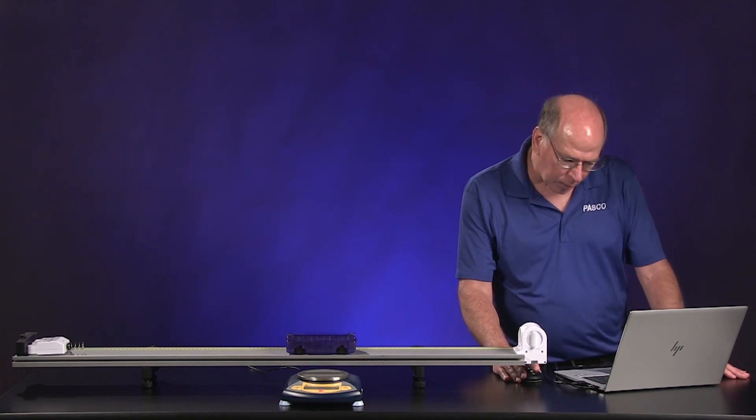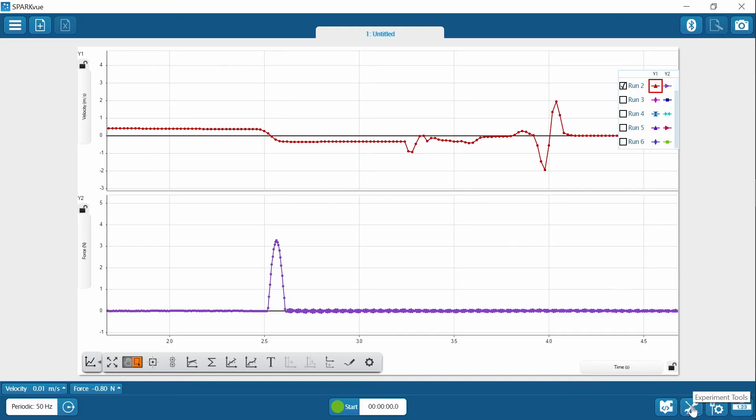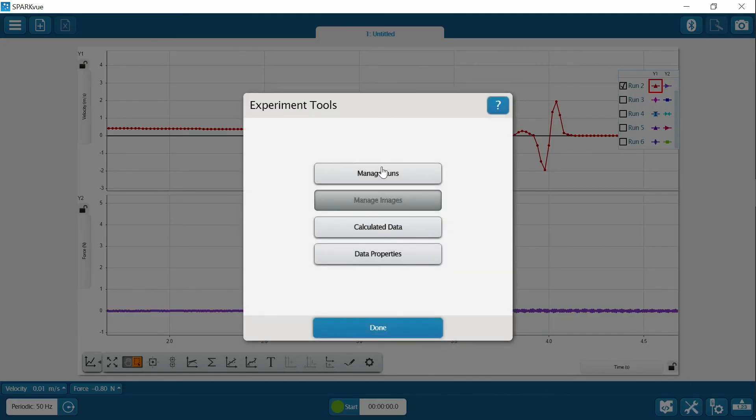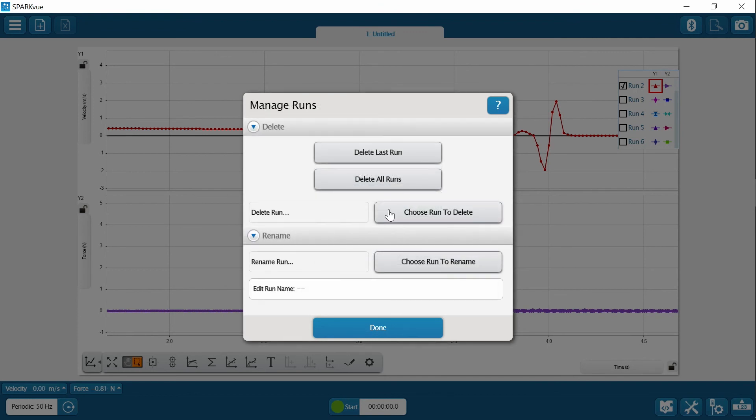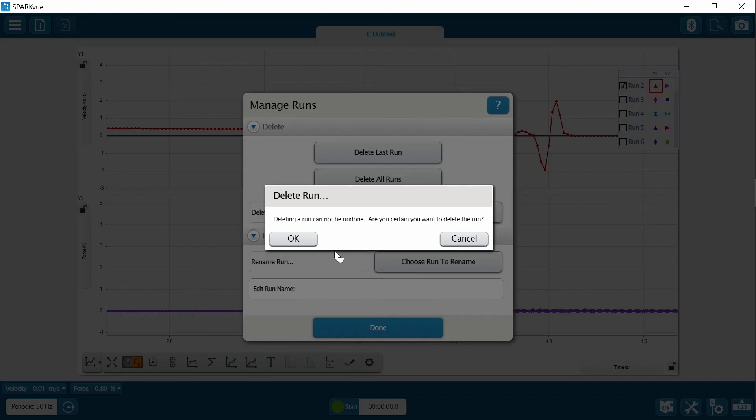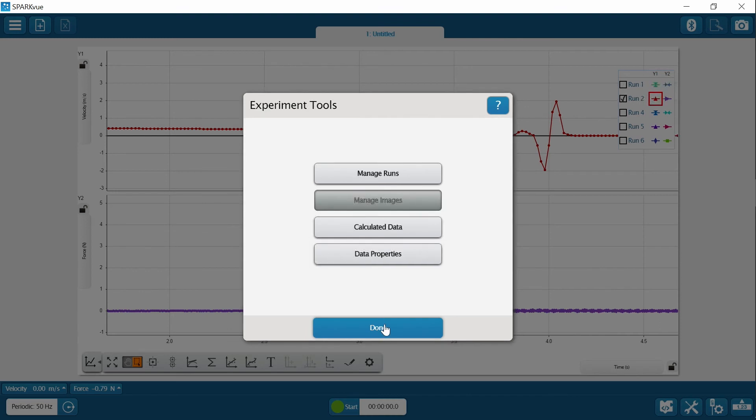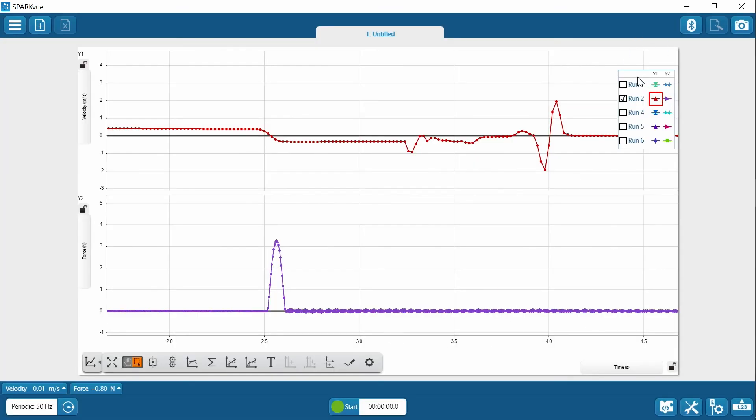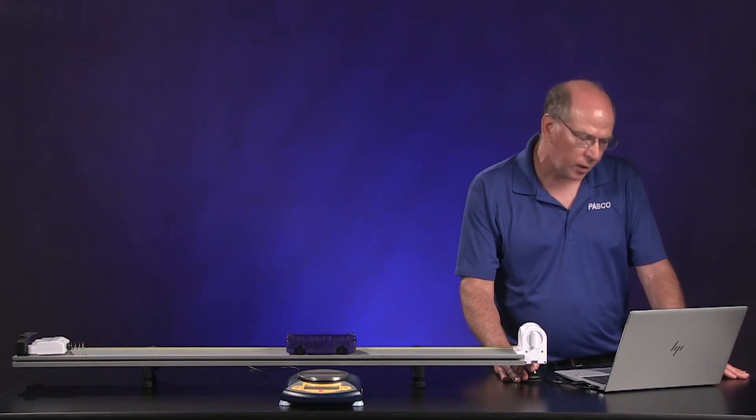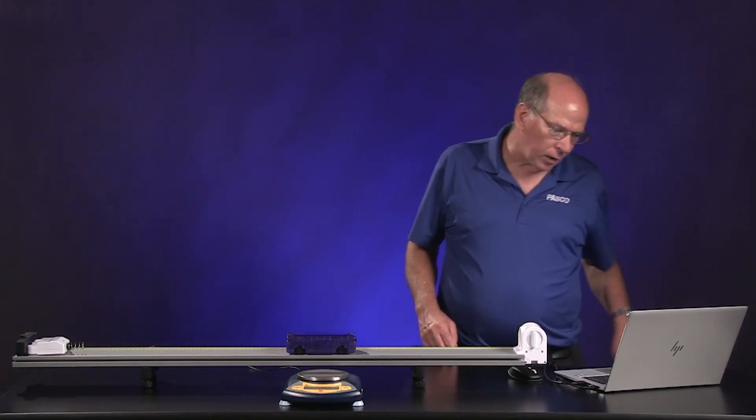So to delete a run, I can go down here to the tools and say manage run. And I can delete the last one, delete all the runs. We want to choose a run to delete, and that was run number three. And so I delete it. And you can still tell it was there. One, two, and then it doesn't show up, but that'll help you with the analysis if that run isn't there.